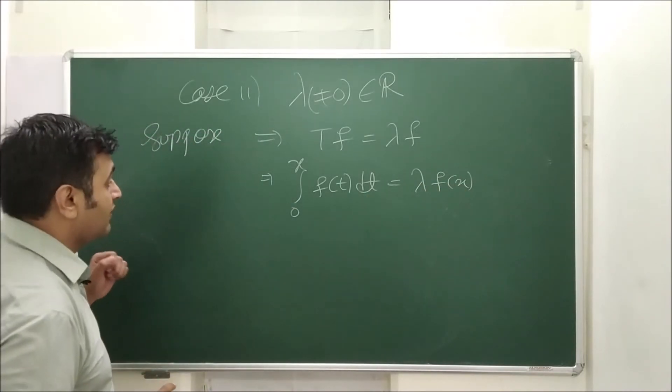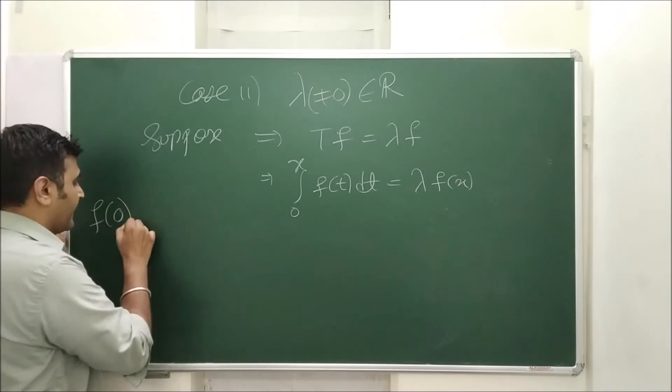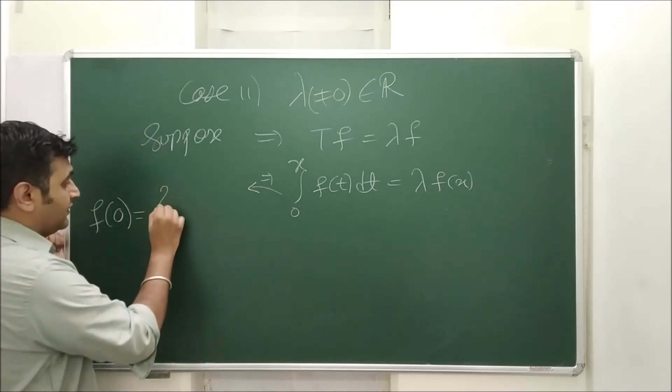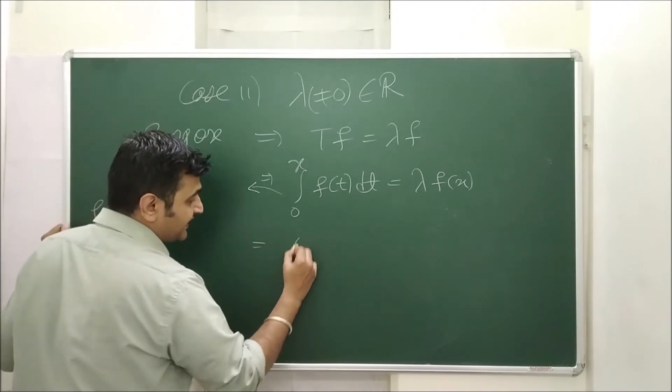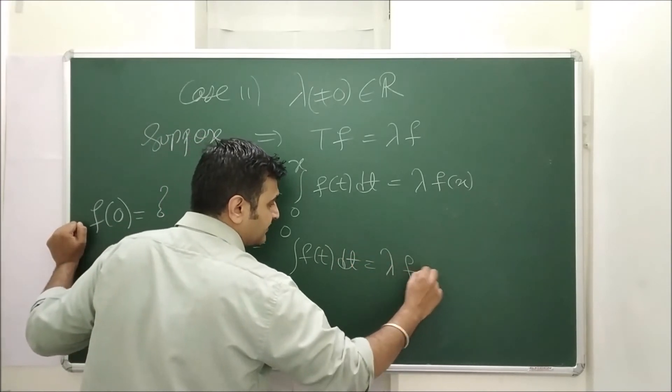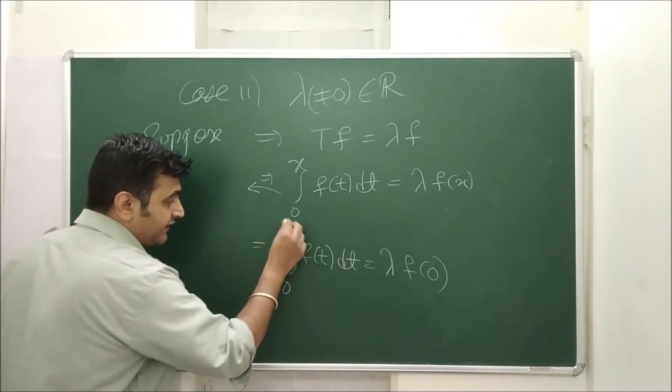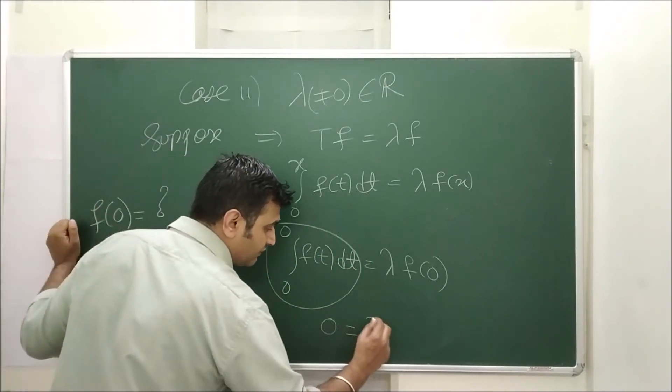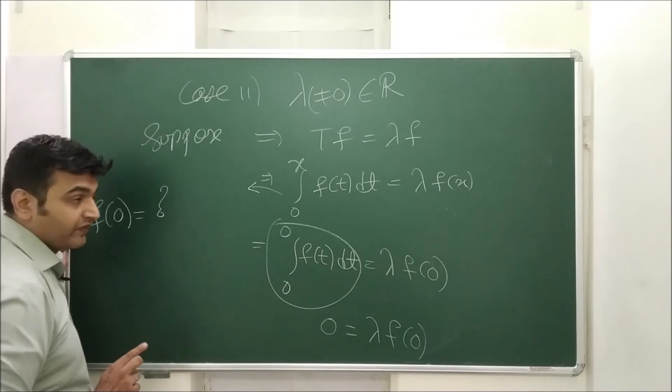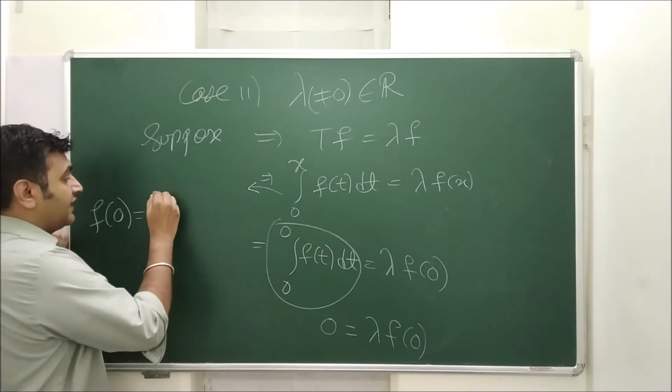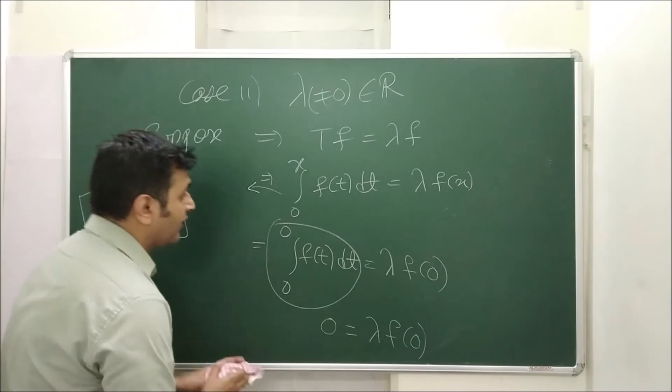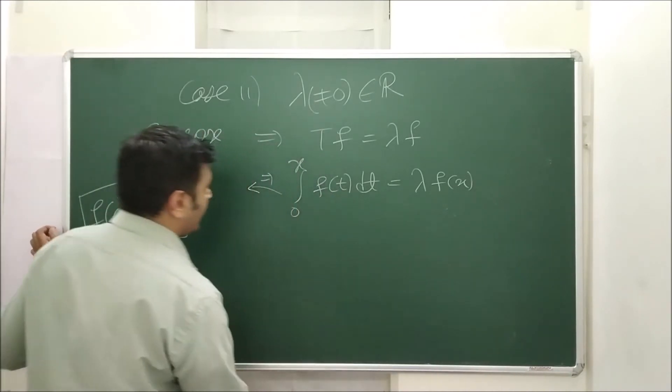Now here one thing you need to observe. What is f of 0? So from here one can observe when I replace my x by 0. So what will I get? When I replace x by 0, 0 to 0 f of t dt is equal to lambda times f of 0. But when the upper and the lower limits are same that means this integration is 0. So 0 is equal to lambda into f of 0 but my lambda is non-zero. Therefore f of 0 has to be 0. So if we have a non-zero eigenvalue lambda then that function should pass through origin. So that's the first observation.